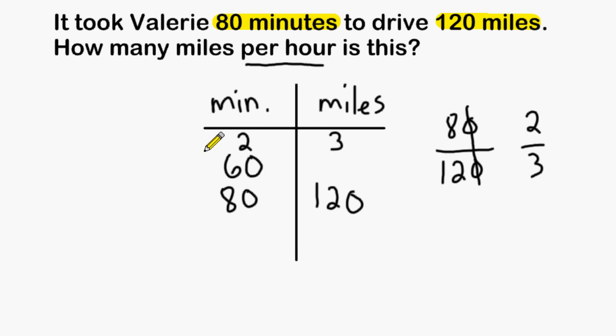Now what we can simply do is take this number 2 and see that it would take 30 of those to make 60. And what we have to do is also increase this number in the middle by the same factor. 3 times 30 is 90. Now we can say that if Valerie covered 120 miles in 80 minutes, at that same rate of speed she will have covered 90 miles in 60 minutes, or we can say 90 miles per hour.